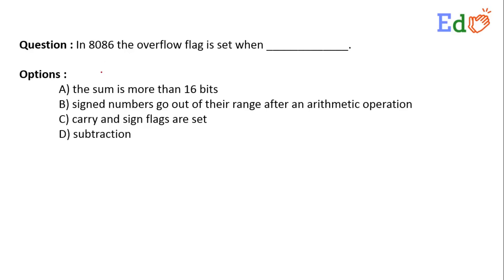We got a question: in 8086, the overflow flag is set when — option A: the sum is more than 16 bits; option B: sign numbers go out of their range after an arithmetic operation; option C: carry and sign flag are set; option D: subtraction.